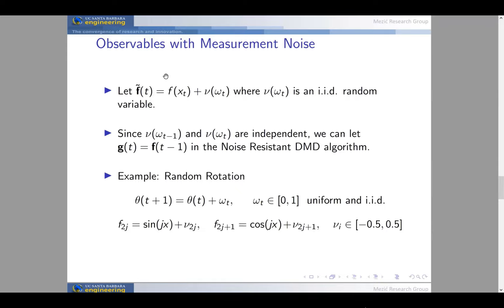The first example where we can have noise is if we just have some measurement noise added to the observables F. We can see that DMD won't converge because these noises might be IID, but they might be correlated with themselves or other noises. But since it's IID, the previous time step we can have independence. So if we just let G be a time shift of F, the previous value of F, we can use that in this noise-resistant DMD algorithm and we will get convergence.